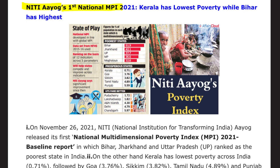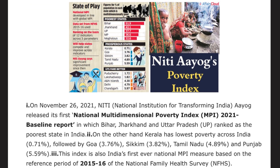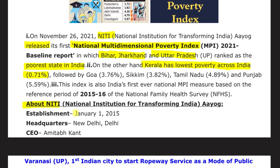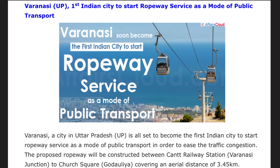NITI Aayog's first National Multidimensional Poverty Index (MPI) 2021 was released. Kerala has the lowest poverty while Bihar has the highest. Bihar, Jharkhand, and UP ranked as the poorest states in India; Kerala has the lowest poverty at around 0.71%. NITI Aayog was established on 1st January 2015, replacing the Planning Commission. Its chairman is the current Prime Minister of India, and the CEO is Amitabh Kant, headquartered in New Delhi.